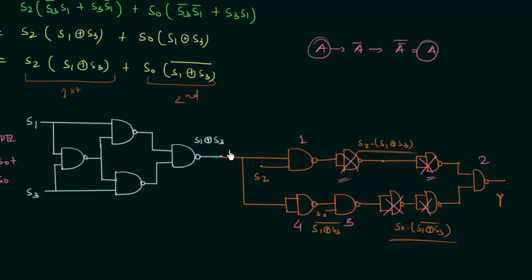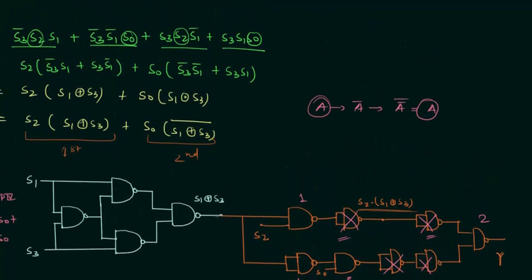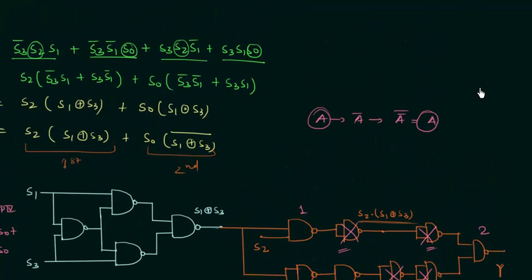So this is how you solve this problem. The most important step was obtaining the factored XOR expression from the minimal SOP form — you can develop this approach only by solving many problems. Try to solve as many problems as possible, and if you have any doubt regarding any part of this lecture, you may ask in the comment section. I will end this lecture here. See you in the next one.